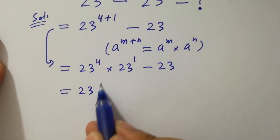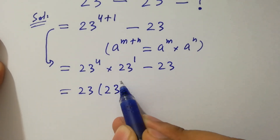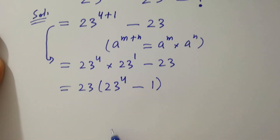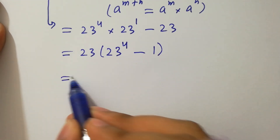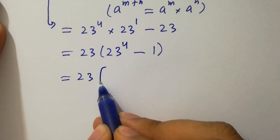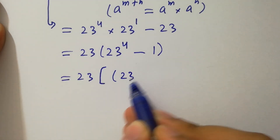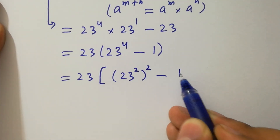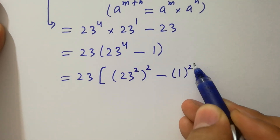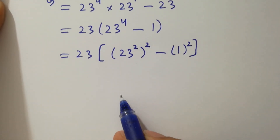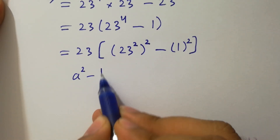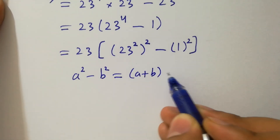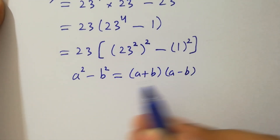23 can be taken as common, giving us 23 times (23 to the power 4 minus 1). This is the same as 23 times (23 squared, whole squared, minus 1 squared). By the formula a squared minus b squared equals (a plus b)(a minus b), we can apply it here.